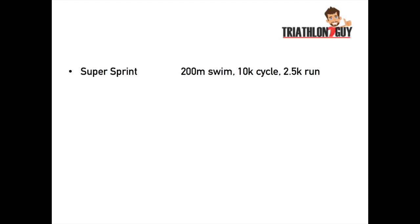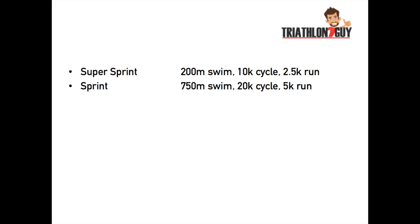The Super Sprint is a 200m swim, a 10k cycle and a 2.5k run. The Sprint is a 750m swim, a 20k cycle and a 5k run.